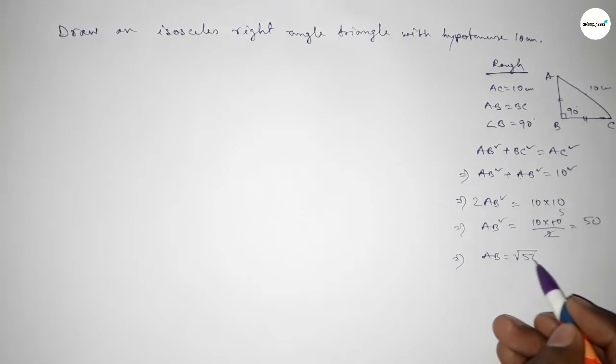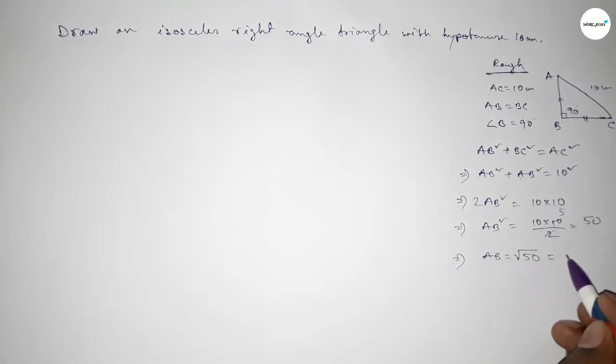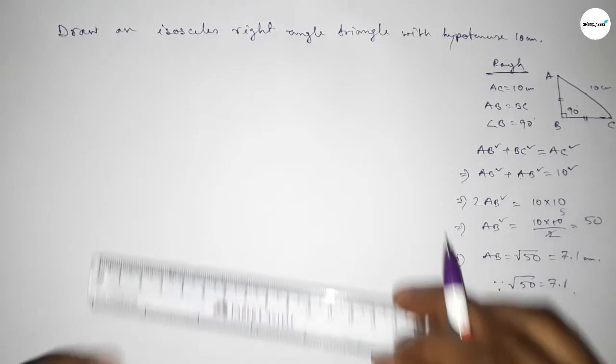Therefore AB equal to root over 50 and root over 50 equal to, we know that 7.1. If you don't know how to find the value of root 50, then please watch my video which I given in channel.